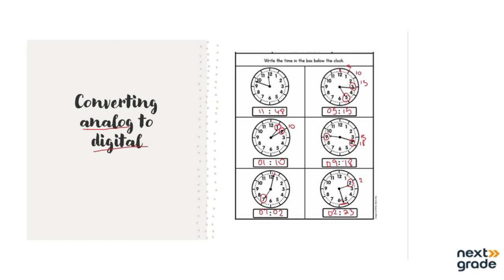This is how we can convert analog to digital clock. If you are given whether it's evening or morning, then we will accordingly use 24-hour format to convert it, because 24 hours represents a full day shown on our digital clock.